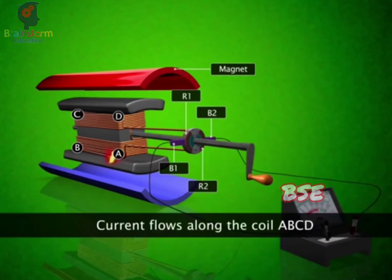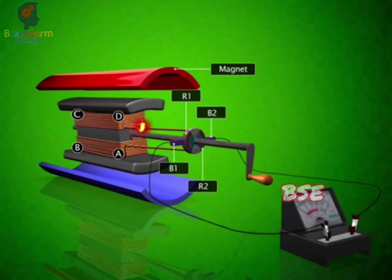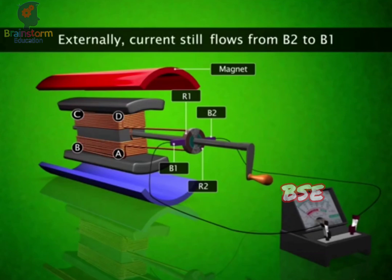The current now flows along ABCD and onwards to R1. But externally, the current will continue to flow from B2 to B1 because B2 is now in contact with R1.